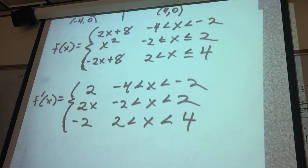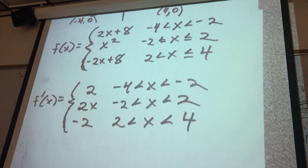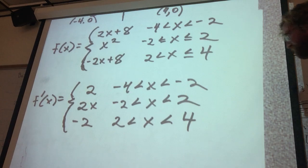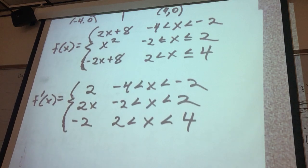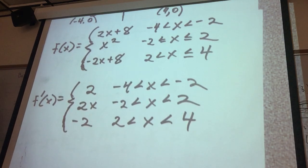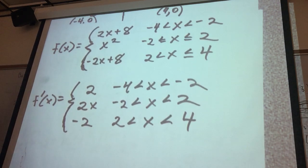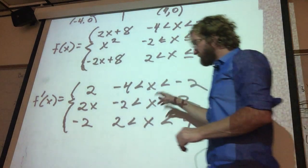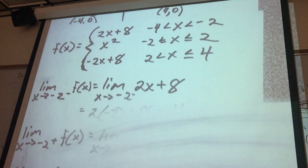What would this derivative actually look like if I tried to graph it? The original function is defined as a piecewise continuous function, and its derivative itself is also a piecewise function — but the derivative is not a piecewise continuous function. Between negative 4 and negative 2, the derivative is up at 2. If I plug negative 2 into 2x I get negative 4, so that piece ends down there.